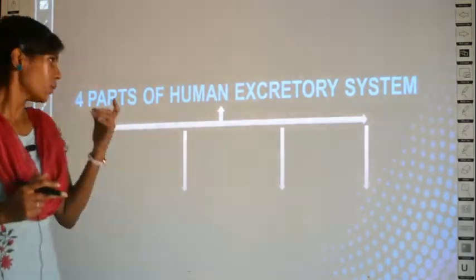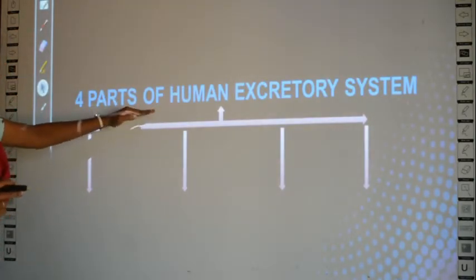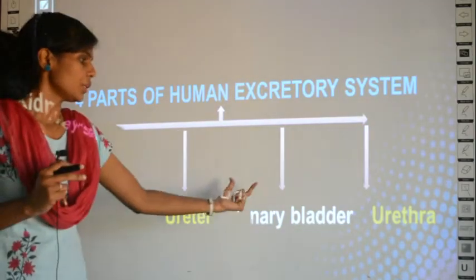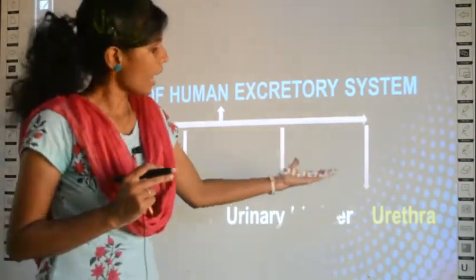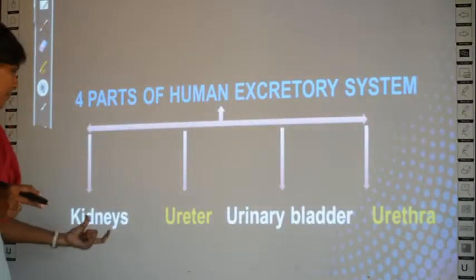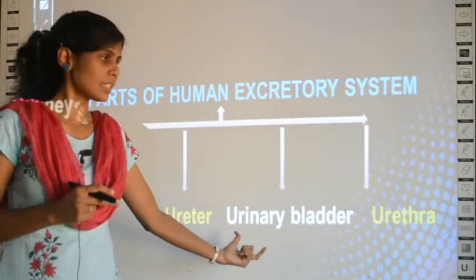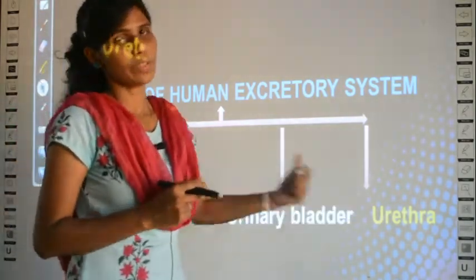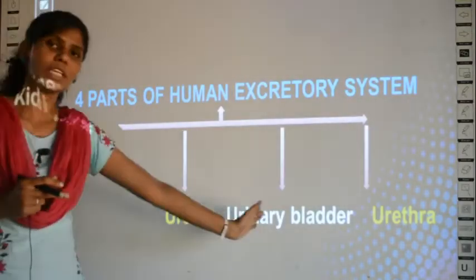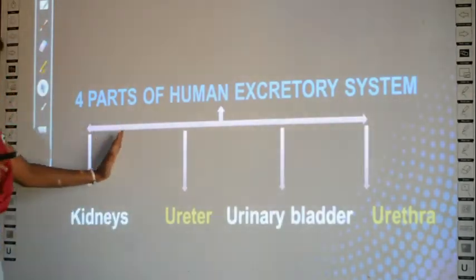What are the four parts of the human excretory system? The four parts include kidneys, ureter, urinary bladder, and urethra. We are going to learn the structure and functions of these four parts in detail in this class.